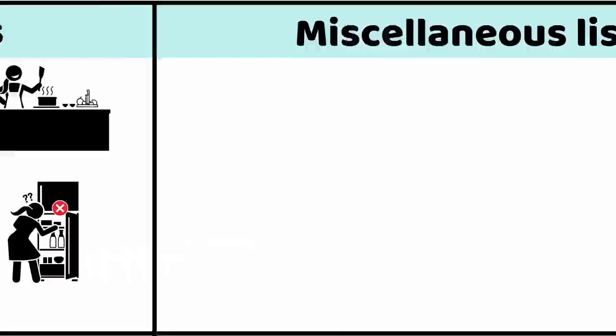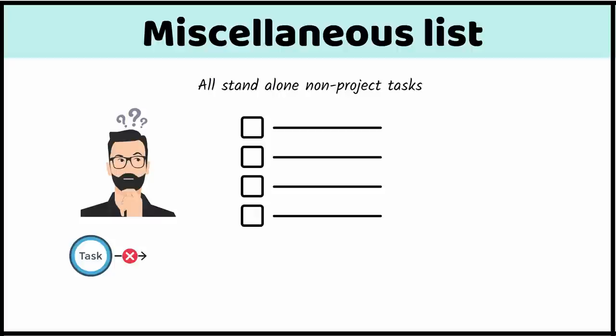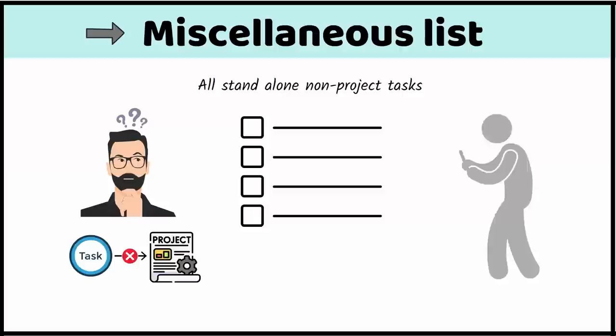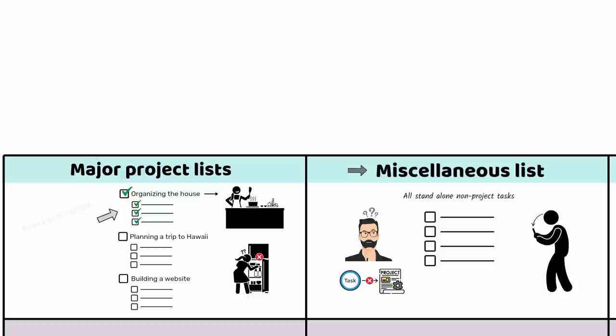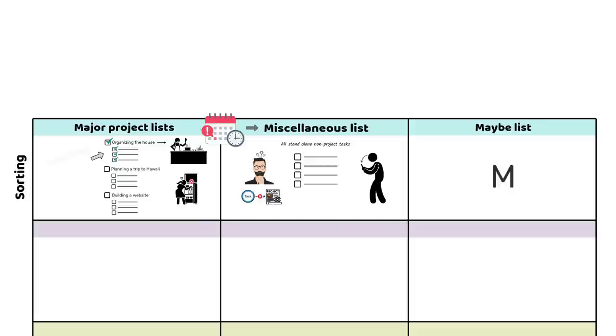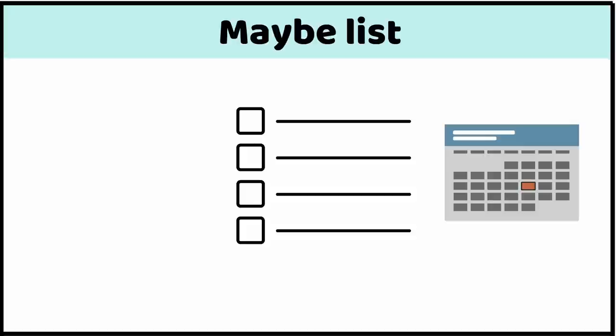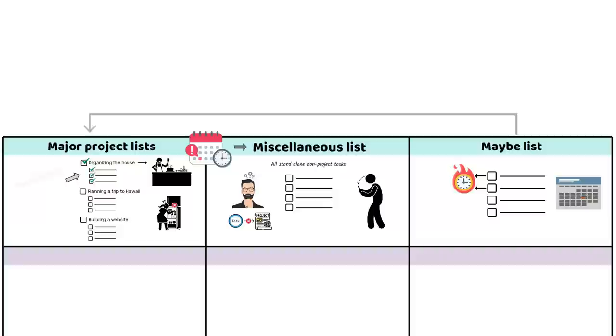All standalone non-project tasks go in a miscellaneous list. Don't overthink it — if you can't easily connect a task to a project, just put it on the miscellaneous list. Having a miscellaneous list lets you capture tasks quickly and get them off your mind. Every task you add to your major project list or miscellaneous list must have a deadline. If you're not ready to assign a deadline, or a task is unclear, put it on the maybe list. Then schedule time to revisit your maybe list once a week or once a month to see if you're ready to apply a deadline and move items to a major project list or the miscellaneous list.